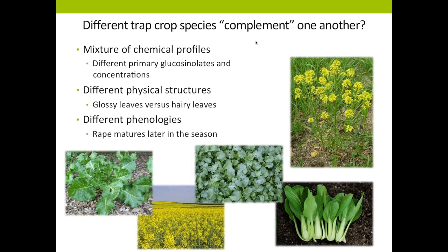We chose these species because they could possibly complement one another. They have a mixture of chemical profiles — crucifer flea beetles are attracted to compounds called glucosinolates, and the plants we chose have different primary glucosinolates. Pacific Gold Mustard's primary glucosinolate is sinigrin, and the rape has different concentrations. They also have different physical structures — for example, collard has glossy leaves versus rape which has hairy leaves — and different phenologies: rape matures later in the field season than all other plants.